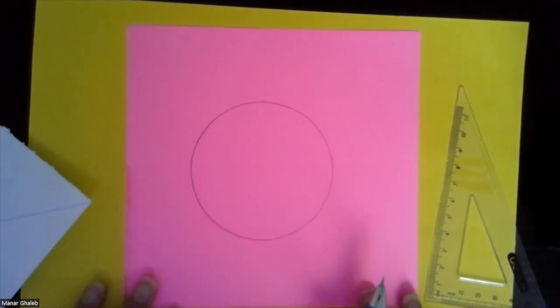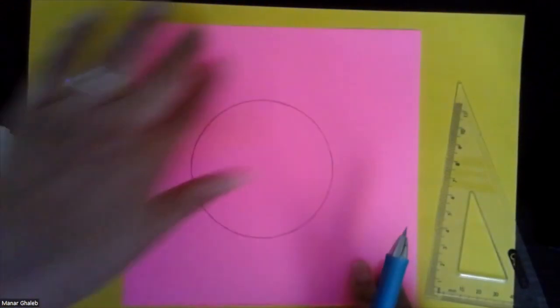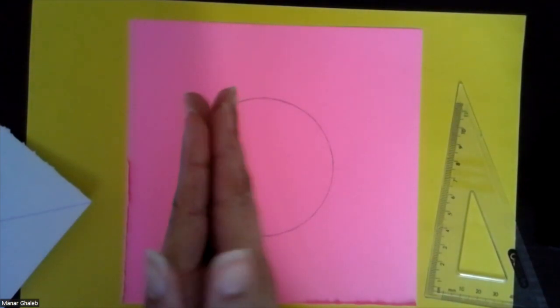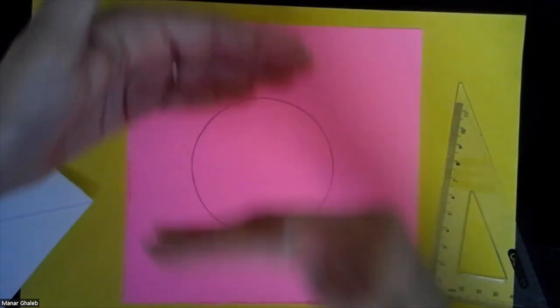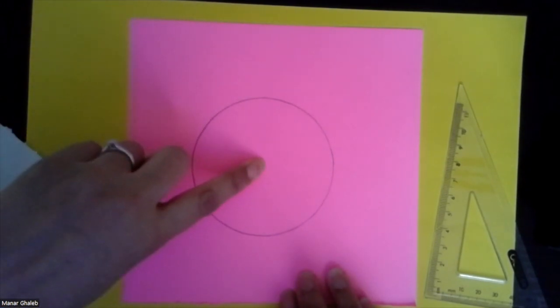So how would the paper folding method work? Well, if I had this circle cut out without all this space here, what I can do is I can fold it in half this way and then fold it in half this way. And wherever those two lines would meet would be the center.